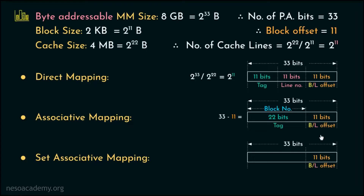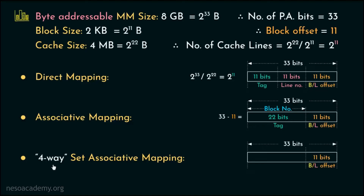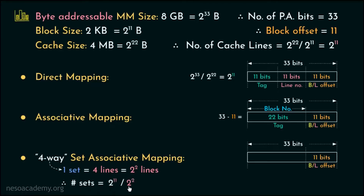Now for the physical address split in terms of set associative mapping, we can't determine the split without specifying the way. So arbitrarily, let's assume it's a 4-way set associative mapping. Since it's 4-way, every set is going to have 4 lines, that is 2 squared lines per set. Therefore, the number of sets is found by dividing the cache lines, 2 to the power 11, by the set size of 2 squared, giving 2 to the power 9. Therefore, 9 bits are used for the set number, and for tag bits we need 33 minus 9 minus 11, which is 13 bits.